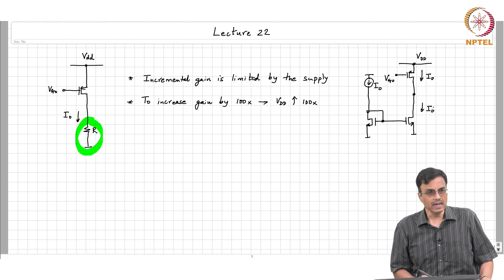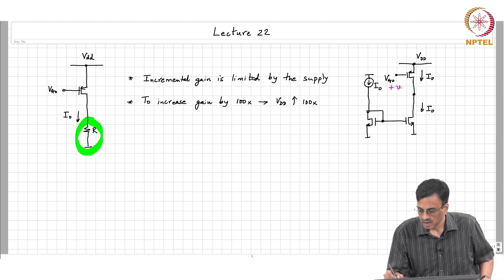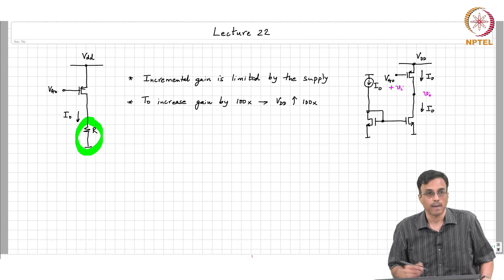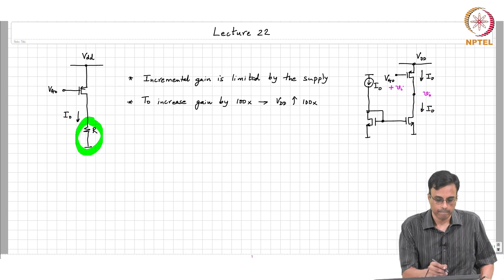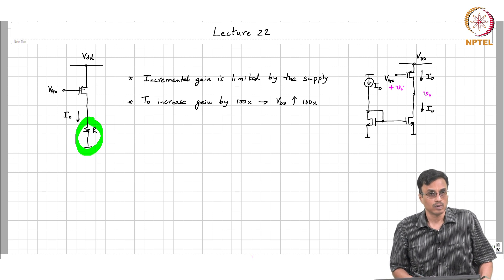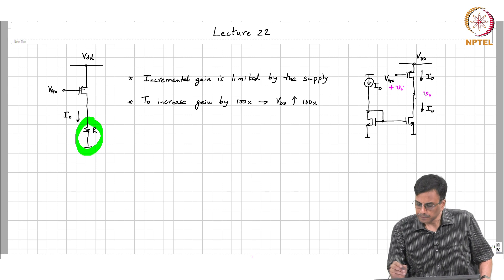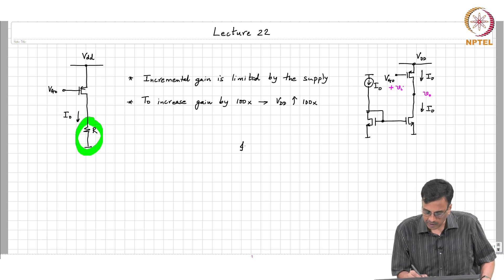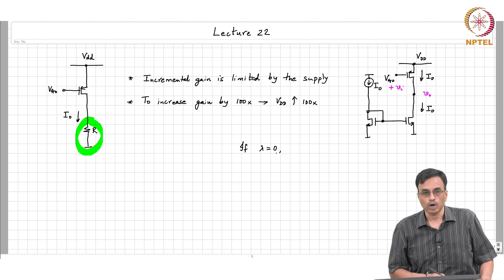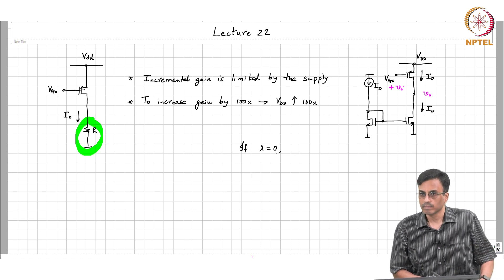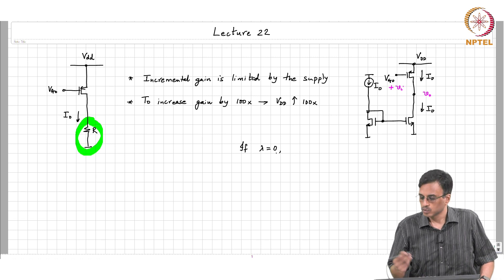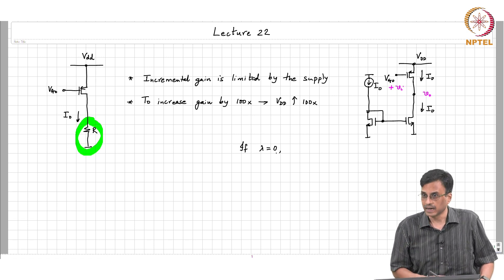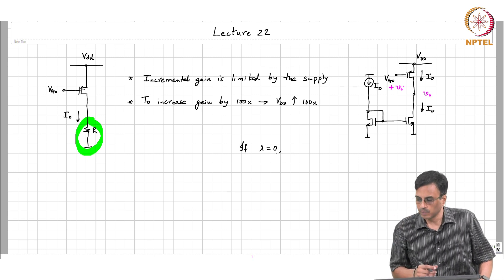What is the incremental gain? If we add an incremental signal, what would be the incremental output? If the transistors are ideal — that is, lambda = 0 for both transistors — the incremental gain would be infinite. Why? Because if the output resistance of the transistors is infinite, the incremental gain you can get is actually infinite. There are multiple ways of seeing this; one is to look at the graphical analysis.